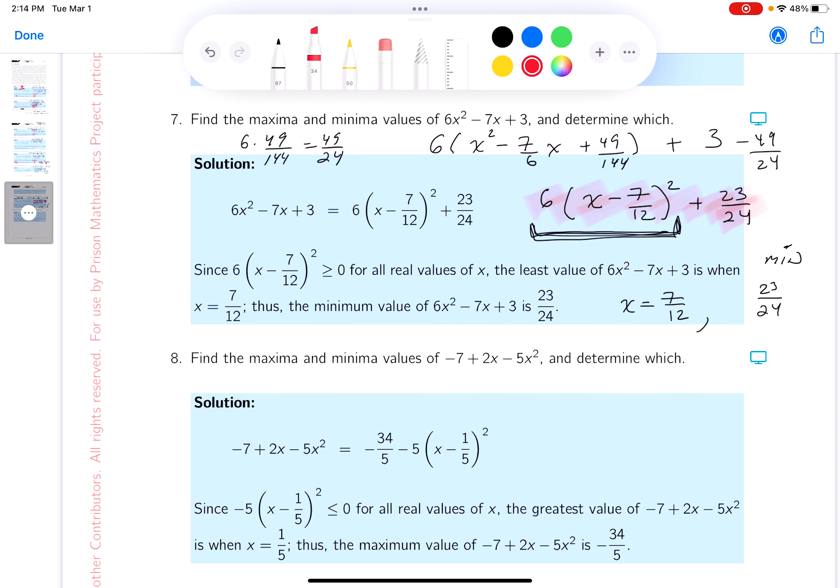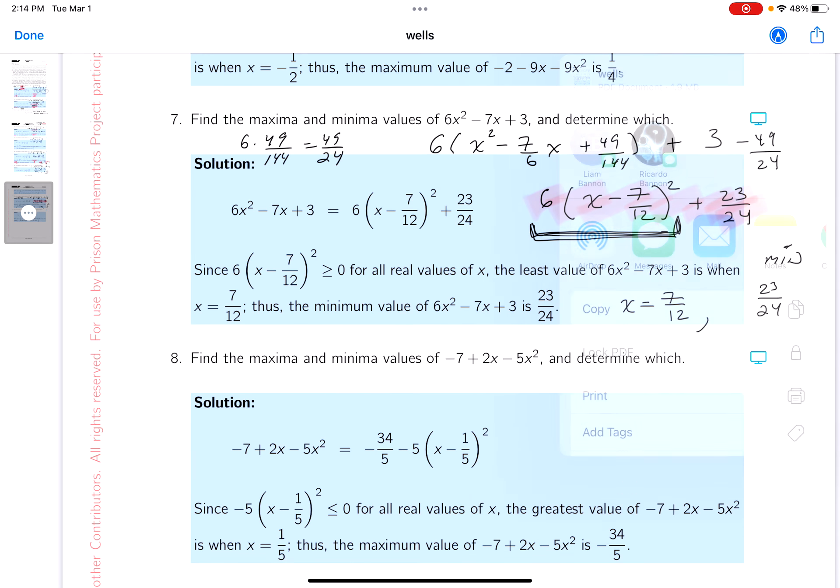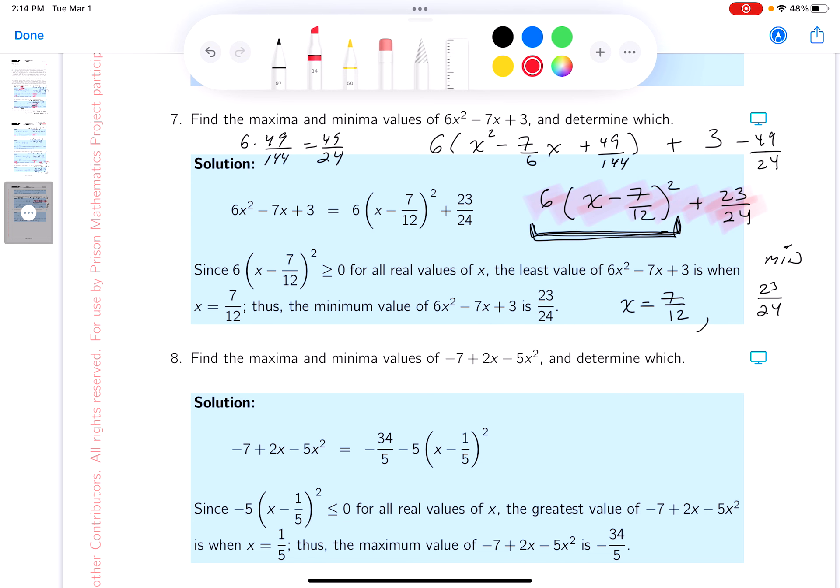Let's read the key. Let's see if we got that. Okay. Least value is what I'm calling a minimum. It occurs when x is 7 twelfths. And what's the value? 23 24ths. Thank you.